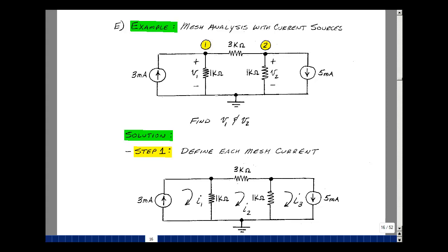Let's again revisit a problem we did earlier with node equations and see if we can solve it with mesh analysis. In this problem previously, we had two current sources, 3 milliamps and 5 milliamps, and we solved for the node voltages V1 and V2.